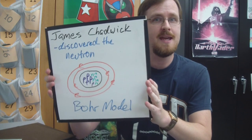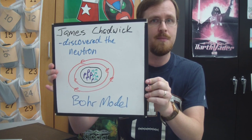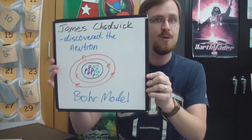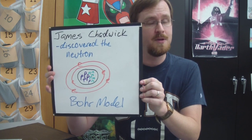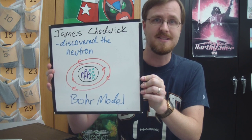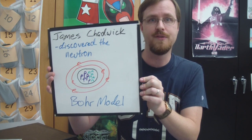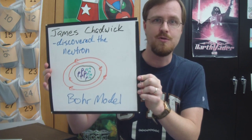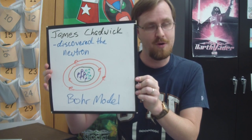And last but not least is a scientist by the name of James Chadwick. Now Chadwick took a look at the current model that Bohr had proposed and realized that the mass of the protons was not adding up to the mass of the entire atom. And therefore there must be something else in the atom — a neutrally charged particle that he called the neutron. And the neutron is also in the nucleus with the proton.